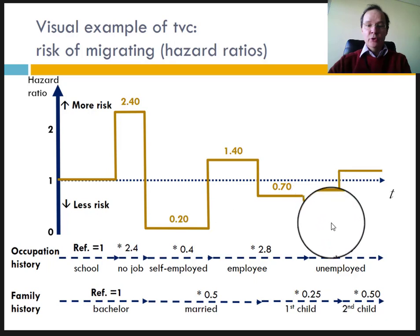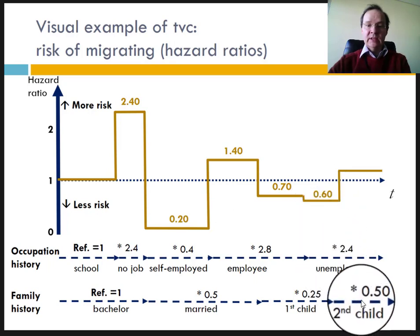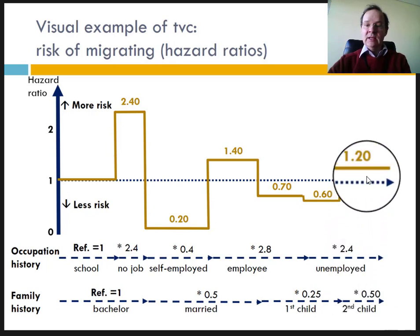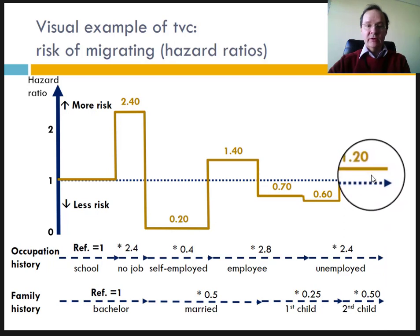A new child, however, augmented her chance to migrate, maybe to a bigger house to accommodate the growing family. By the time of last observation, this woman had 20% more chance to migrate than when she was a bachelor at school.